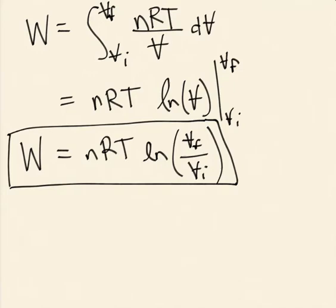If the final volume is less than the initial volume, we get negative work, because the logarithm is the log of a number less than one. If I don't change the volume, I get zero work. If the volume increases, the work done is positive. Physically, this is the work done by the gas. If the gas is compressed, it's gaining energy, so the work done by the gas is negative. If it's expanding, the gas is doing work against its surroundings to push them out of the way — that's positive work from the point of view of the gas. If the gas is expending energy, the work it does is positive; if it's gaining energy, it's a minus sign.